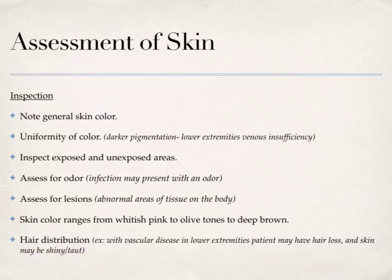Hair distribution is also linked with systemic diseases. With vascular disease, patients may have hair loss on their lower extremities if they have peripheral vascular disease, and their skin may be shiny or taut. Even hair distribution on the head can be related to hypothyroidism. So you always have to look at hair in the context of other systemic findings.